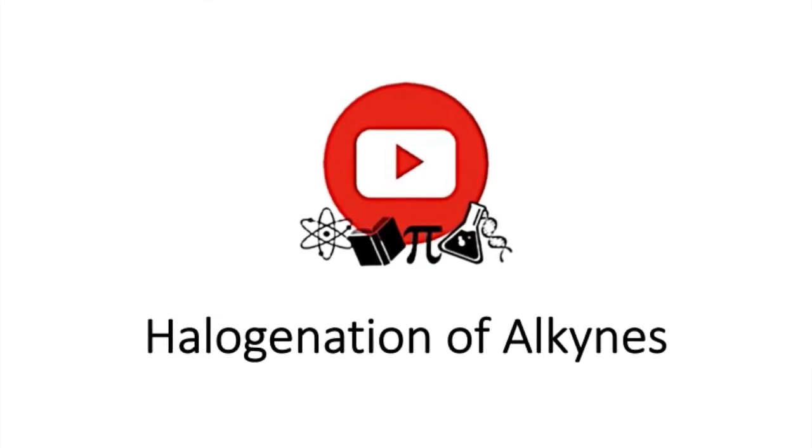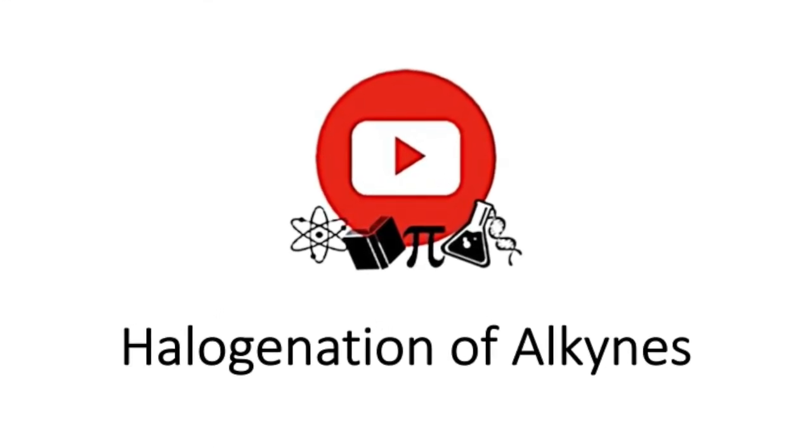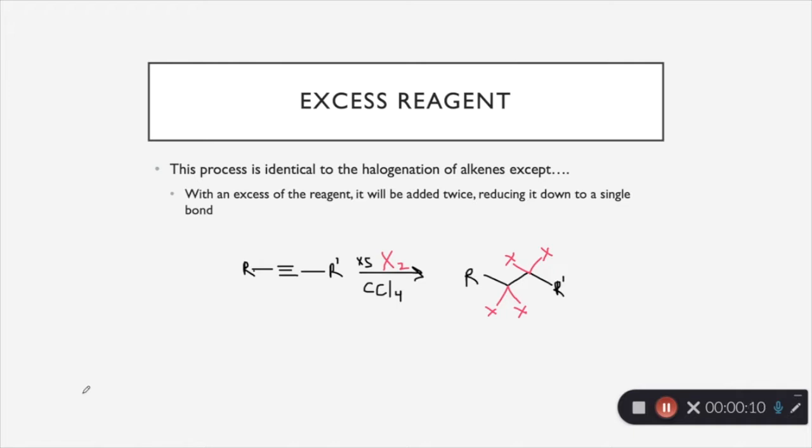In this video, we are going to be talking about halogenation of alkynes. This process should be very familiar because it is almost identical to the halogenation of alkenes except for one thing. With an excess of reagent, it can be added twice to that triple bond, reducing it down to a single bond and leaving you with four added halogens instead of two.